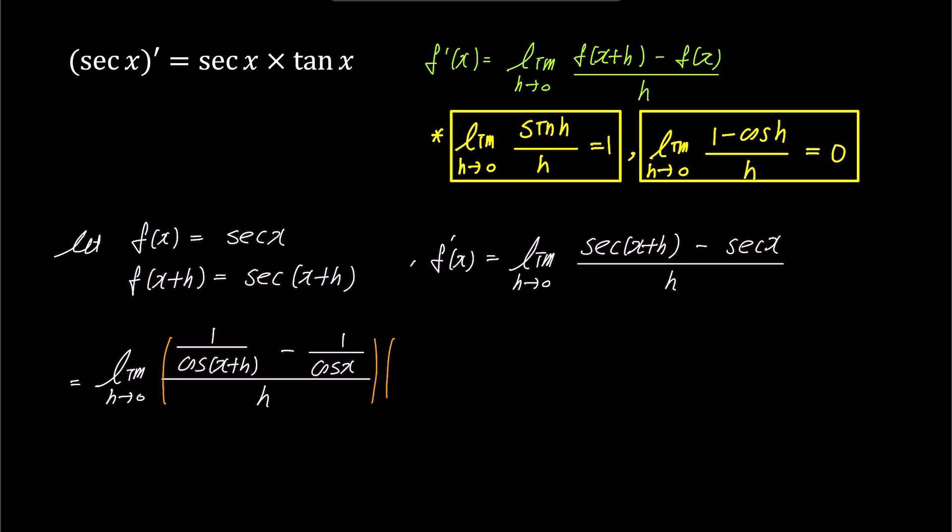To simplify the fractions in the numerator, we'll multiply both the numerator and denominator by cosine x plus h times cosine x.